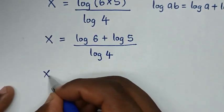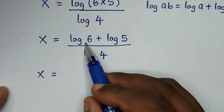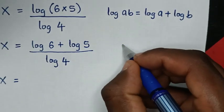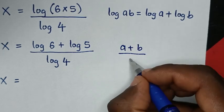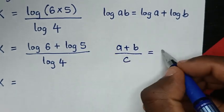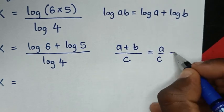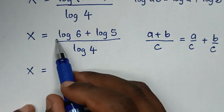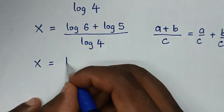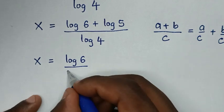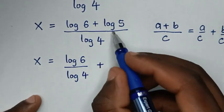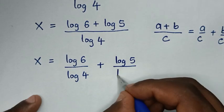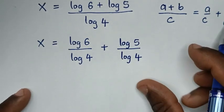So x is equal to log of 6 plus log of 5, over log of 4. This is in the form of (a + b)/c, which equals a/c plus b/c. So it becomes log of 6 over log of 4, plus log of 5 over log of 4.